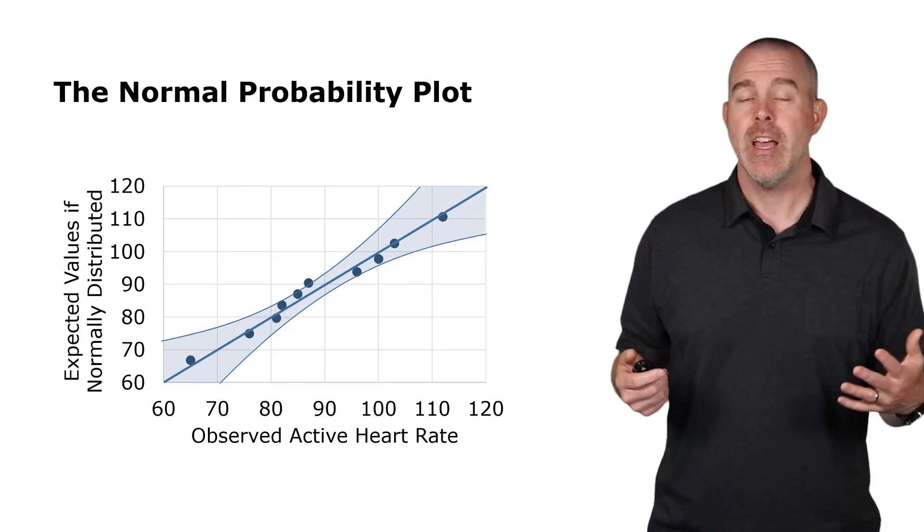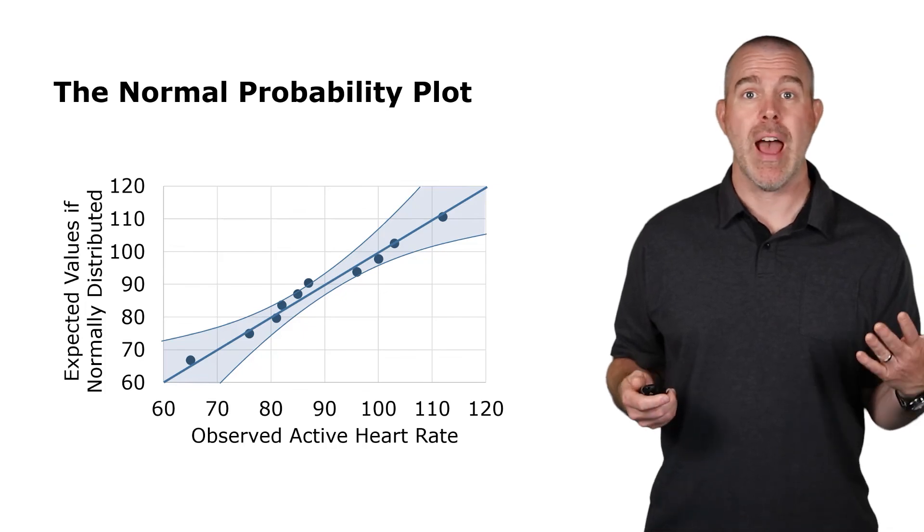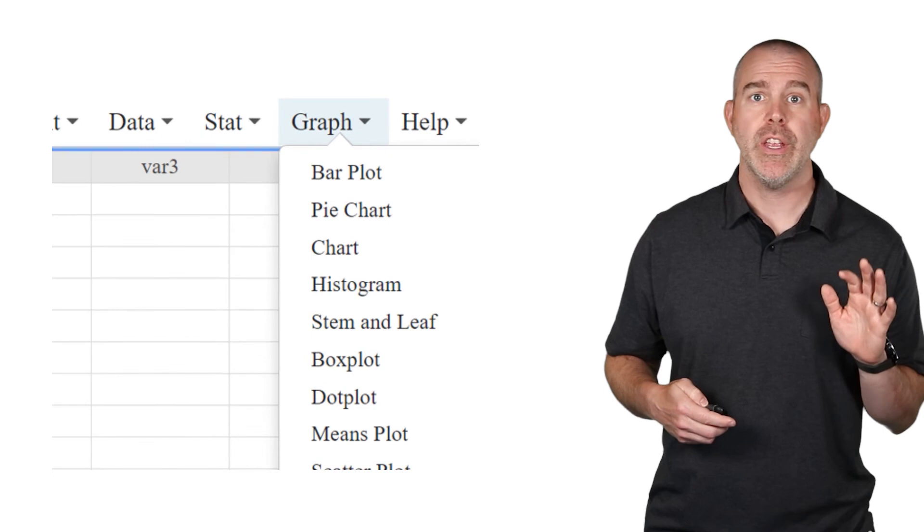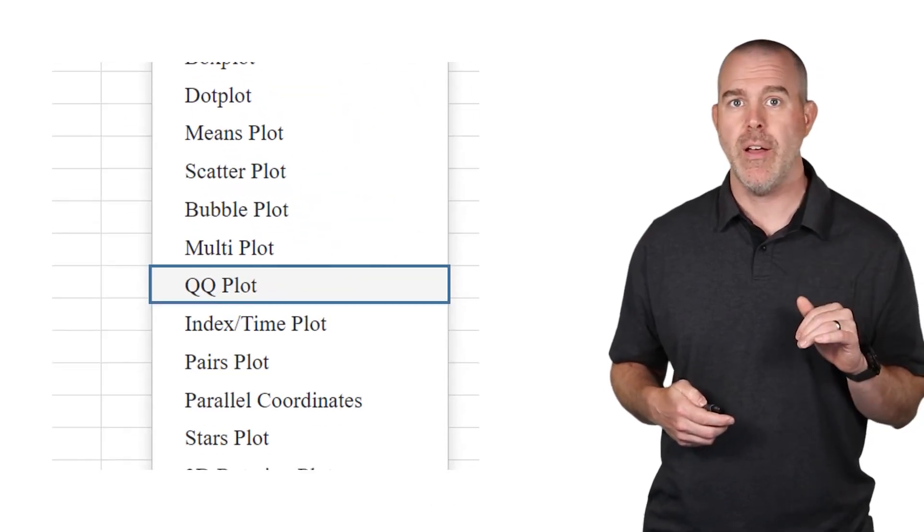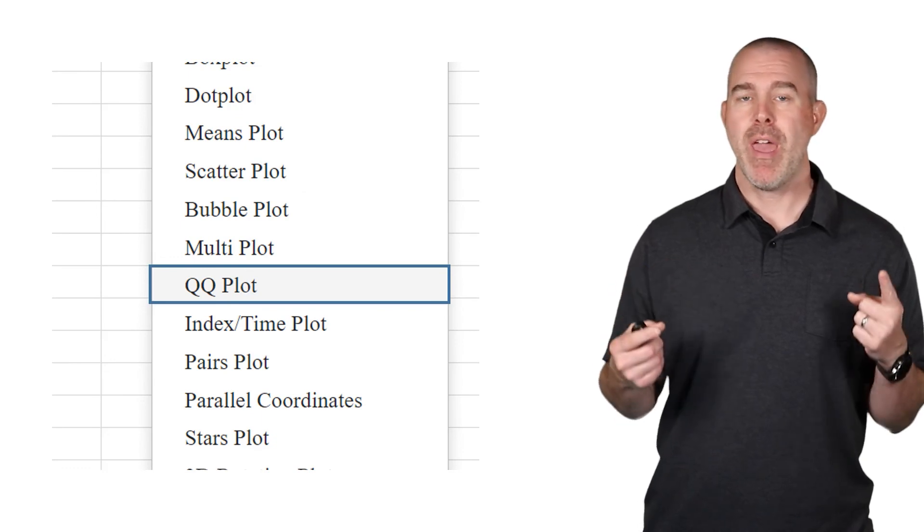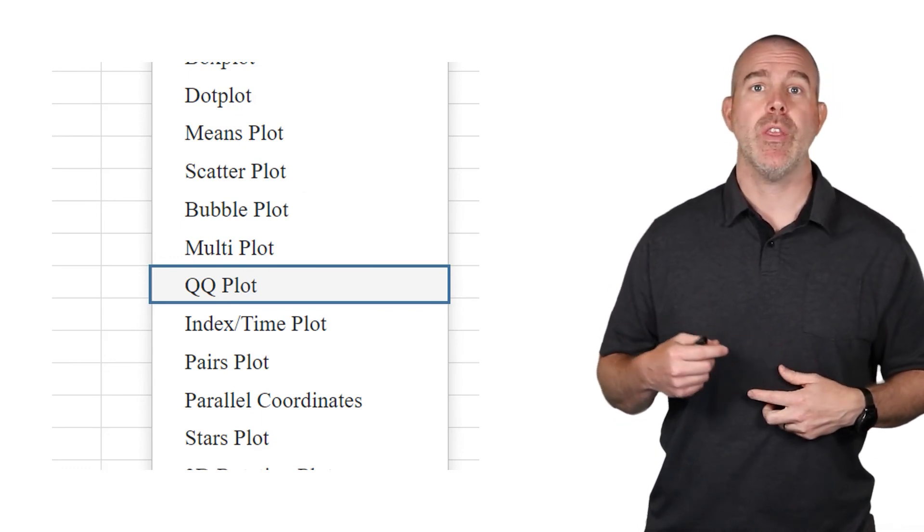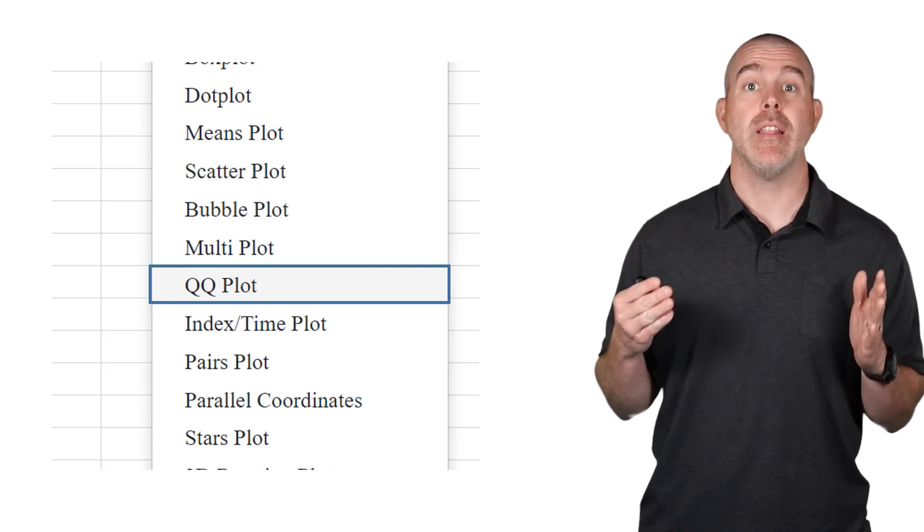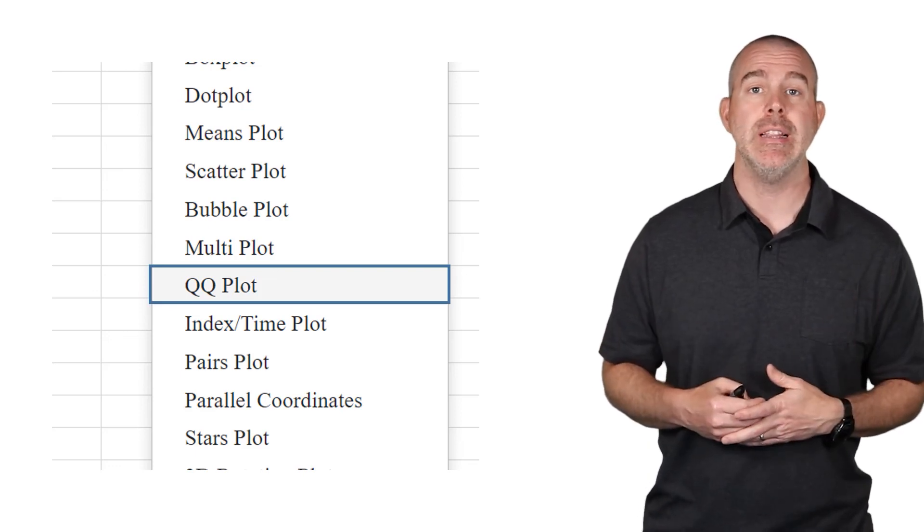StatCrunch unfortunately does not, but there is a quick way to get this graph in StatCrunch. There's a specific graph set aside for this and it's called the QQ plot. You have to go down the list, QQ plot. That's this plot that compares the expected x values with the actual x values from the data. And again, what you're looking for here is a line. You're looking for this to be fairly linear.